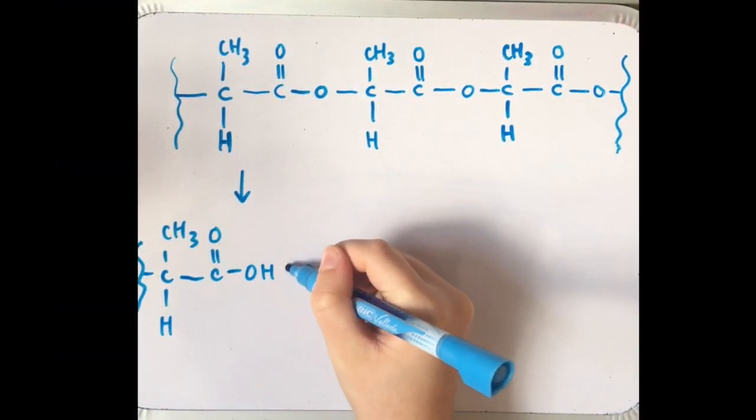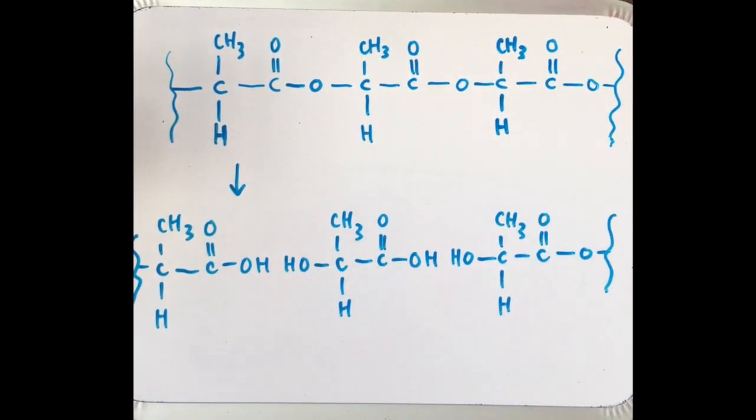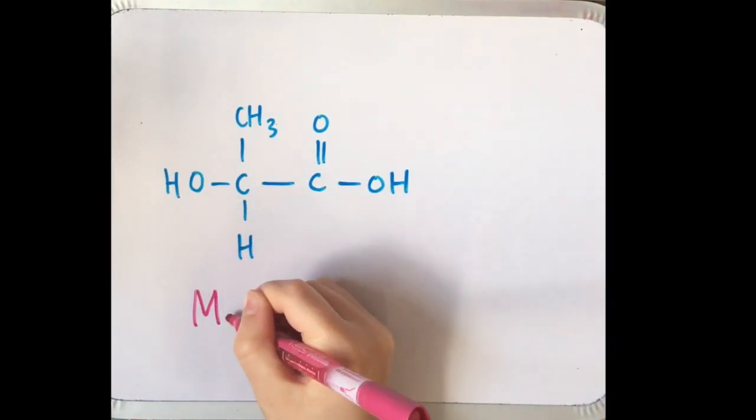Once hydrolysis has occurred on enough ester bonds in polylactic acid, we start to form molecules with a molar mass of less than 4000.